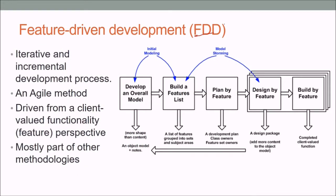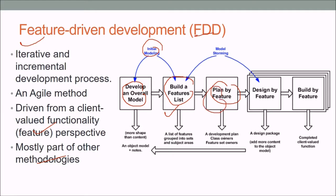FDD — Feature-Driven Development — is an agile, iterative and incremental development process driven from a client value, functionality, and feature perspective. The process involves: initial modeling, developing the overall model, building a feature list, planning by feature (grouped into feature sets and subject areas with class and feature-set owners), and then model storming — design by feature and build by feature — where design packages are created and client value functions are completed.